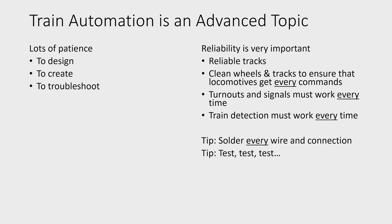What you think might work may actually not work in all cases. It could be that maybe you made some train automation that worked well for short trains but doesn't work well for long trains. Or maybe you have a locomotive that just brakes a lot slower than other locomotives, so it might run through a safety section. So you need to be absolutely sure that everything works — test, test, test and test again.